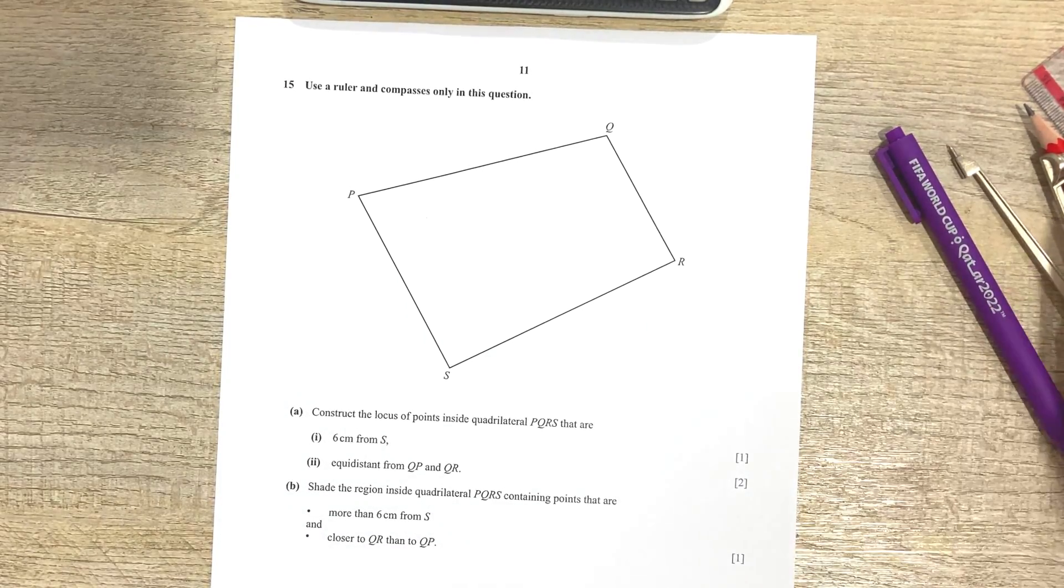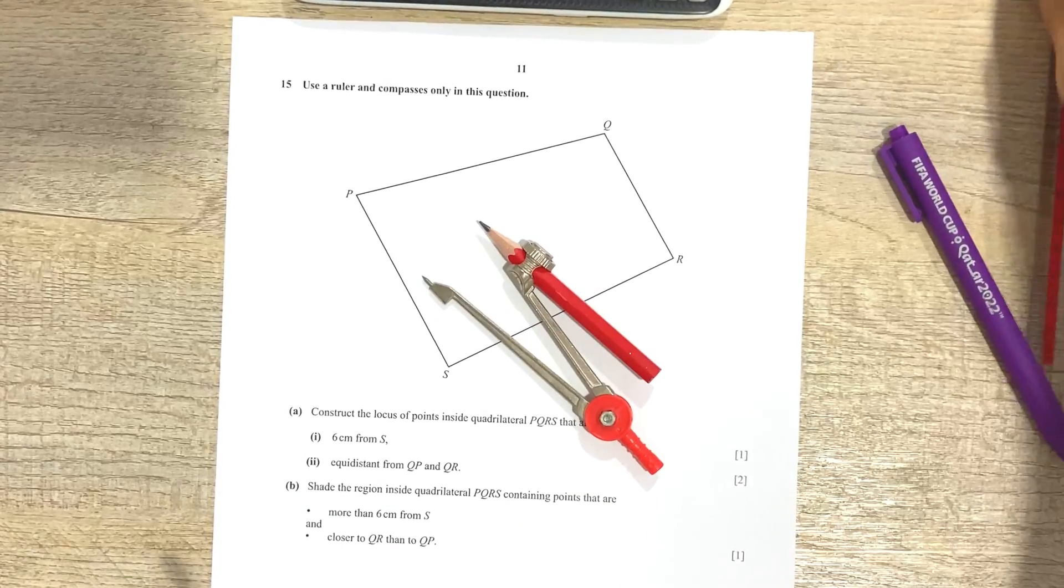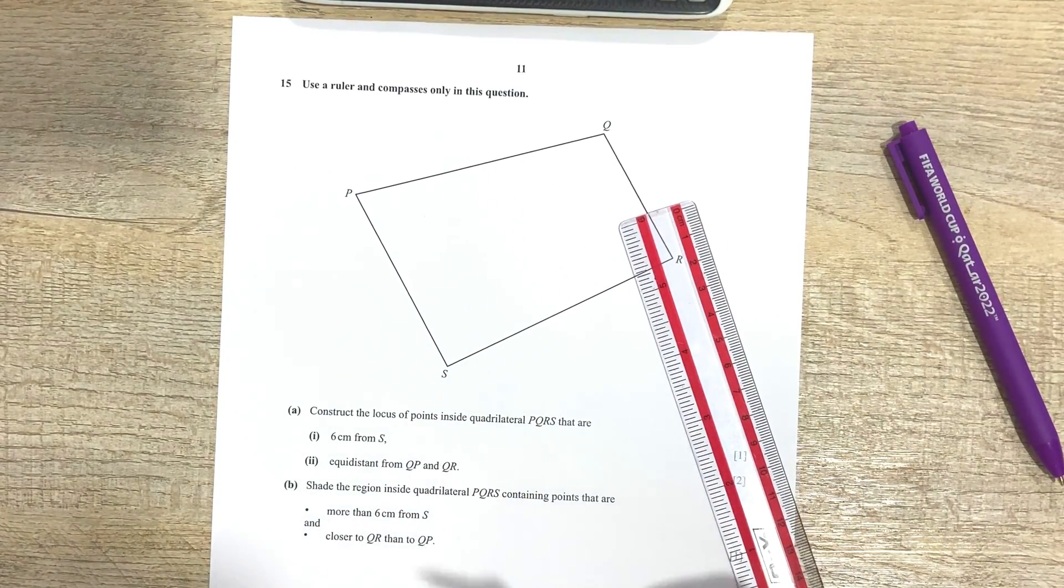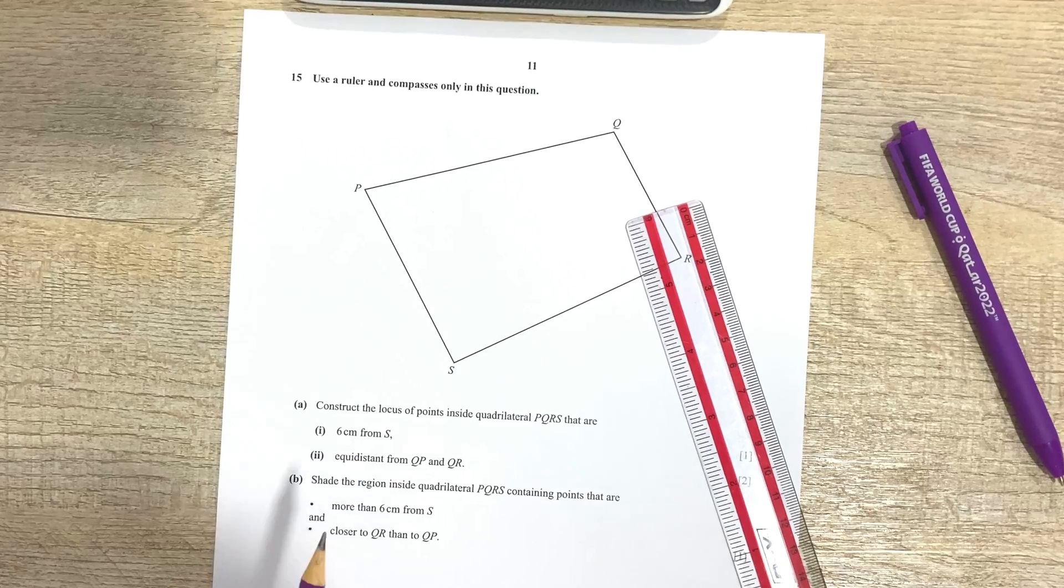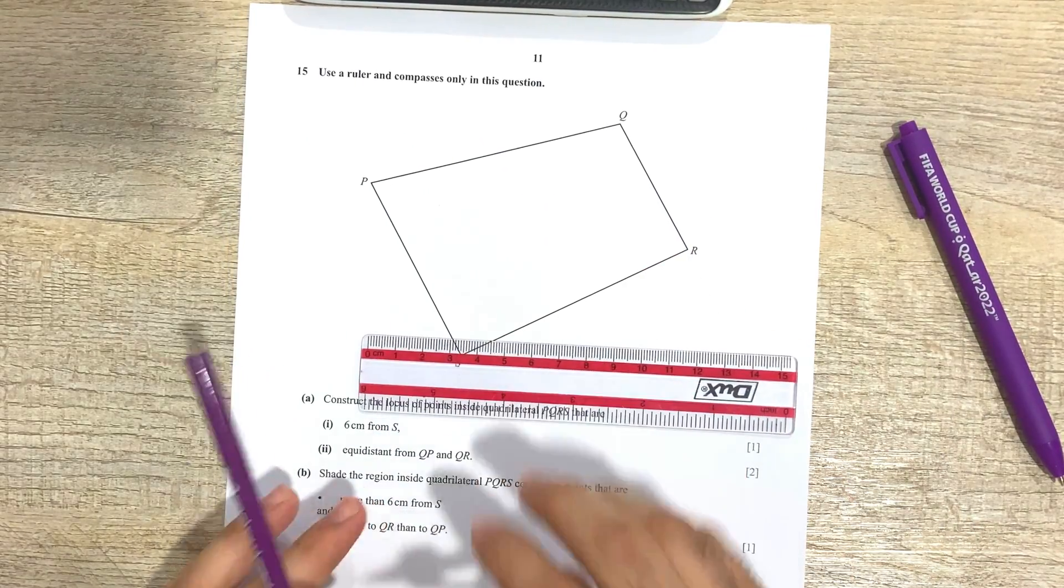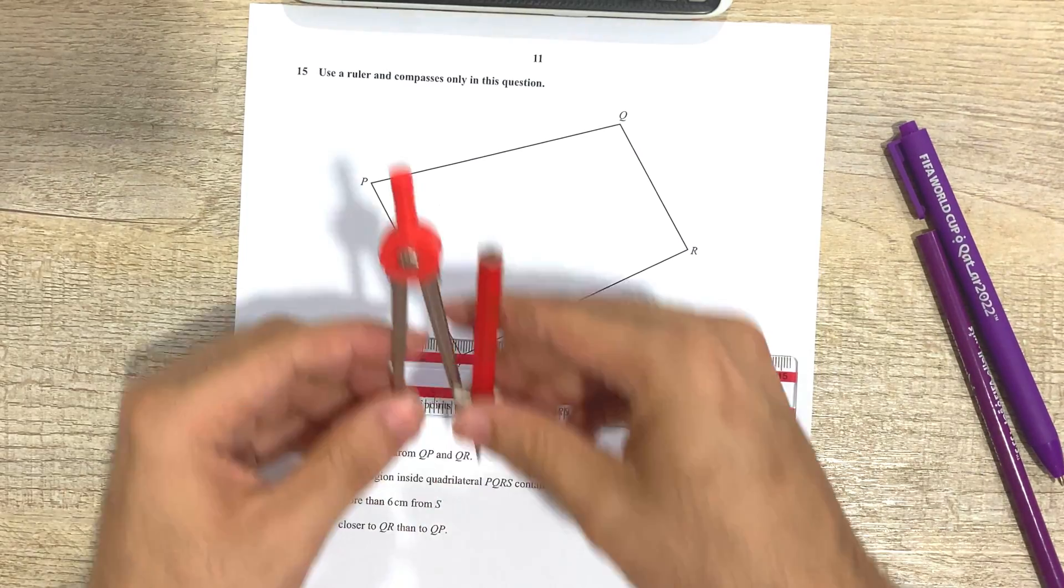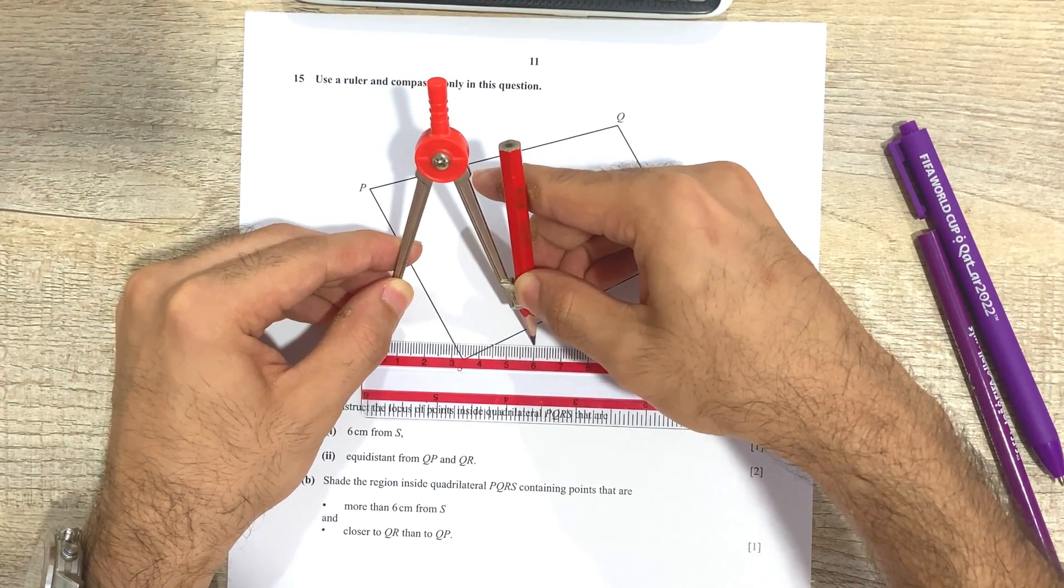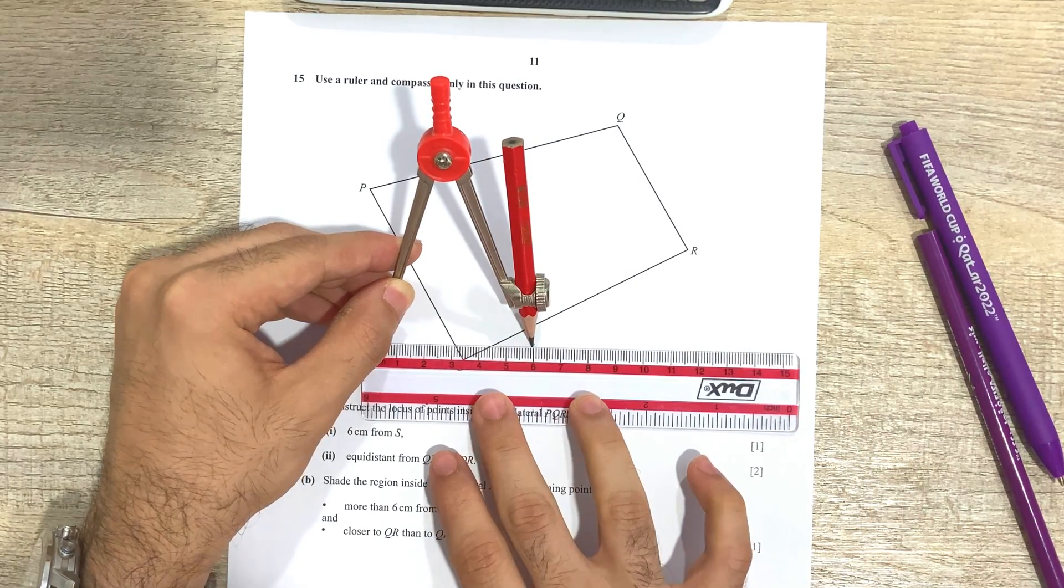It says over here, use a ruler and compass only in this question. So here's our compass and here's our ruler. Okay, construct the locus of points inside the quadrilateral PQRS that are 6 centimeters from S. Okay, so that shouldn't be difficult at all. So I'm going to place my scale over here, open the compass up until 6 centimeters. So that's that. So there you go, this is 6 centimeter, is it? Yeah, 6 centimeter.